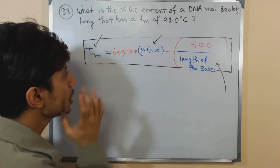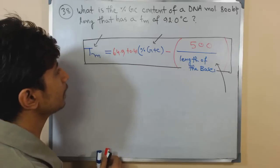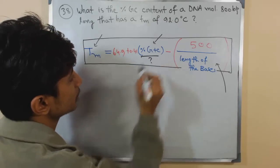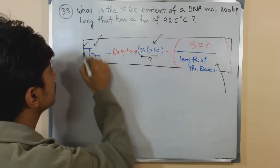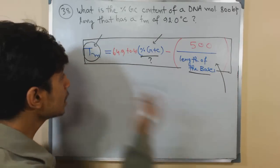What we need to calculate is the percent GC content, which is unknown. Everything else is provided - Tm is provided, length of the bases is also provided.